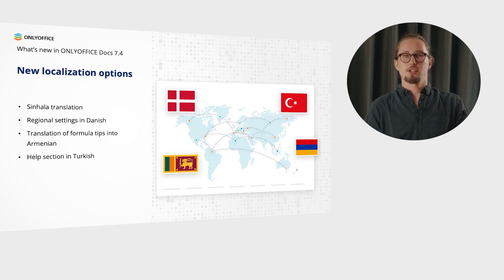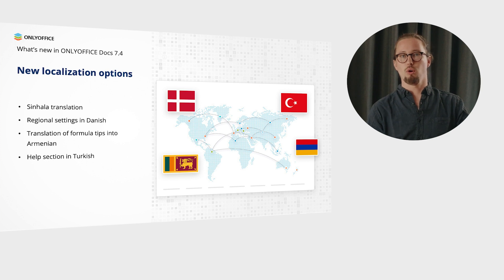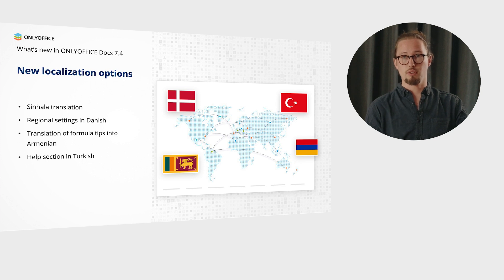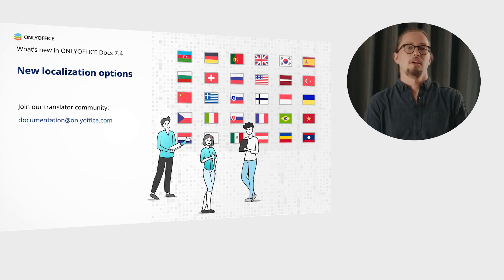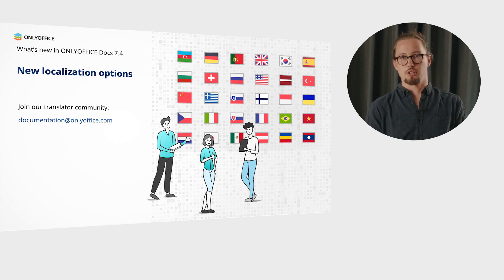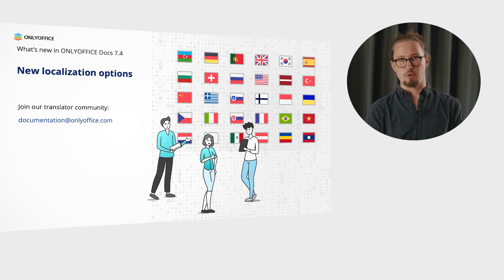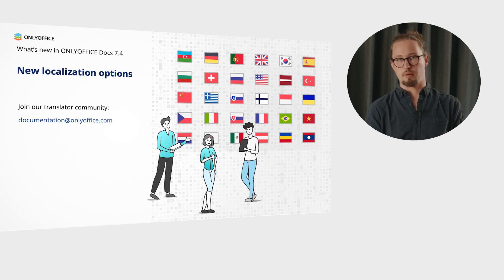Localization of OnlyOffice Docs is constantly improved to make the suite accessible to users all over the world. In version 7.4, you will find Sinhala translation for the editors, regional settings in Danish, the translation of formula tips into Armenian, as well as the help section now in Turkish. The OnlyOffice team always welcomes contributors and translators to the community. Join us to help others use the editors in their native languages and get a reward — just send your suggestions to documentation@onlyoffice.com.